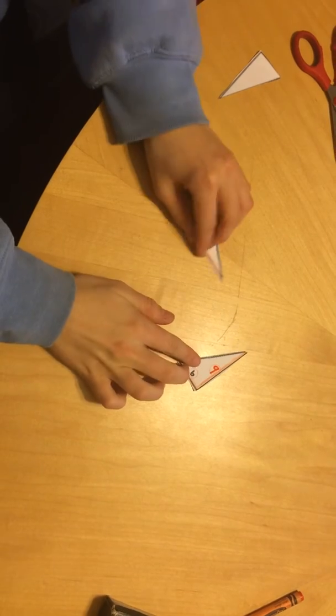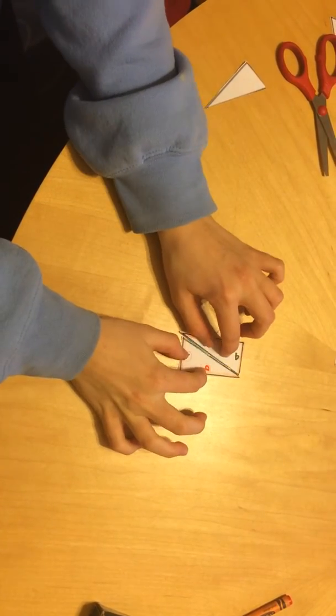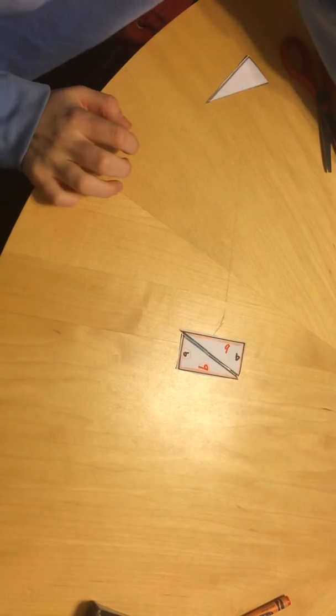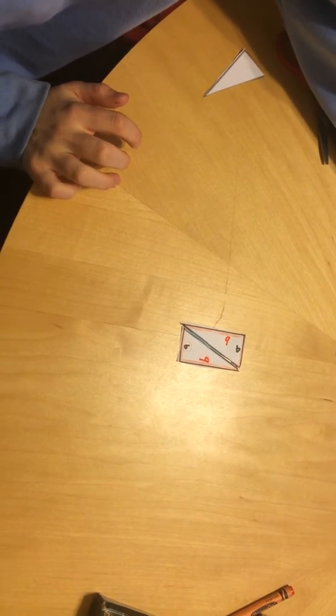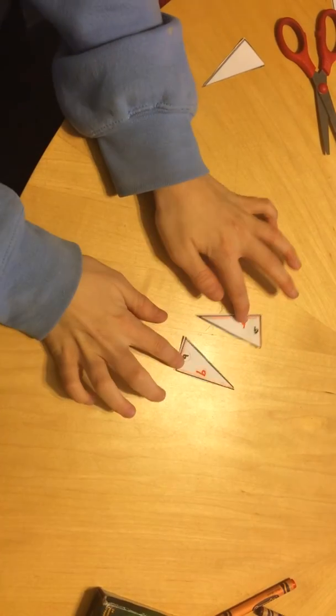Alright, once you have your two triangles, put both of the long sides together. Do you notice anything? A rectangle is made up of two triangles.